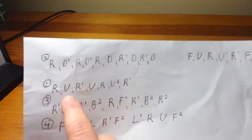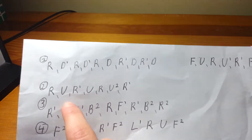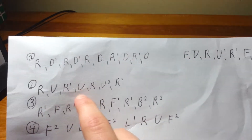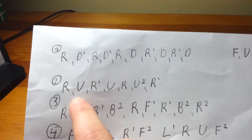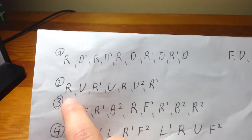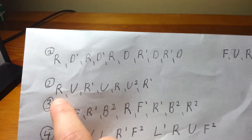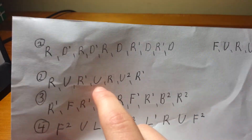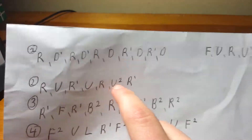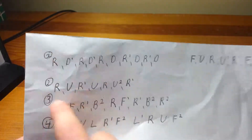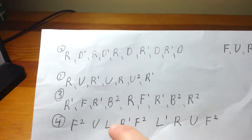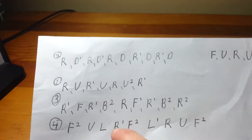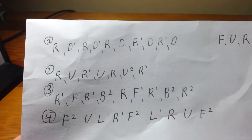Right here. I like this one because it's really fast to do. R, U, R prime, U, R, U2, R prime. That one right there, number two. Pause the video, look at that, do it on your Rubik's Cube and see what happens.